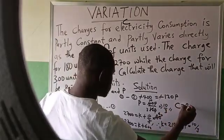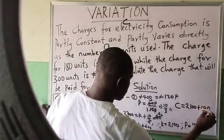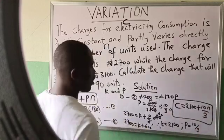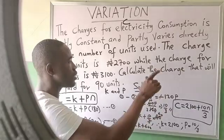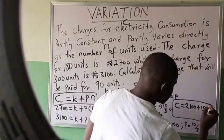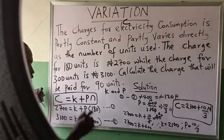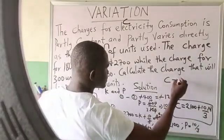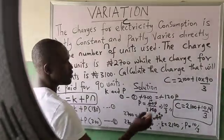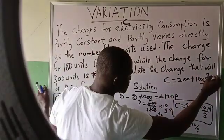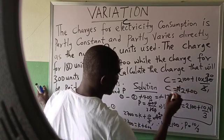So our relationship is C = 2100 + (10/3)N. That is the formula connecting charges C and number of units N. Now, to calculate the charge for 90 units: C = 2100 + (10/3)(90) = 2100 + 300 = 2400. So the charge for 90 units is 2400.